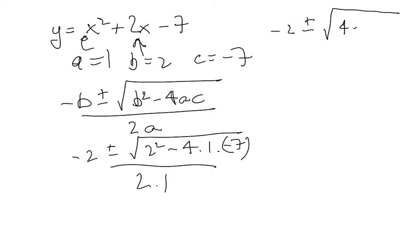So 4 plus 28 square root of 32 over 2 is equal to minus 2 plus or minus square root of 32 all over 2.